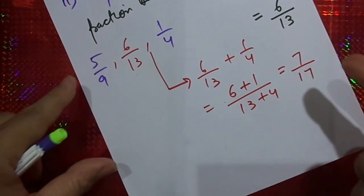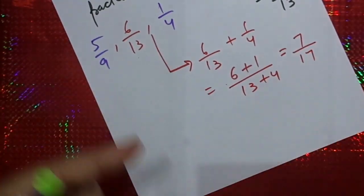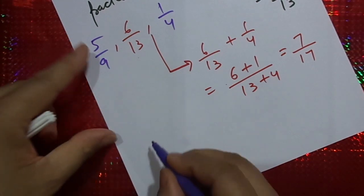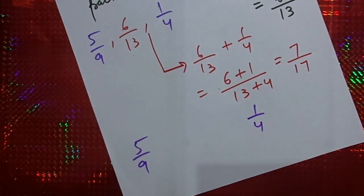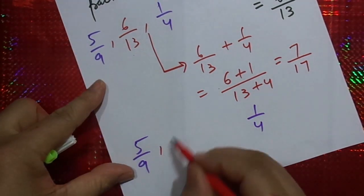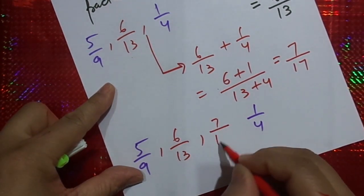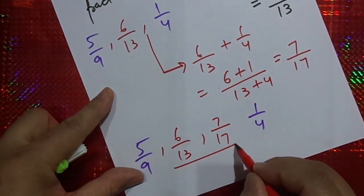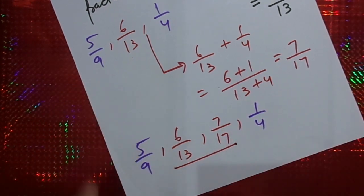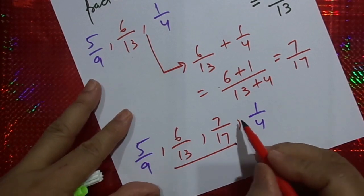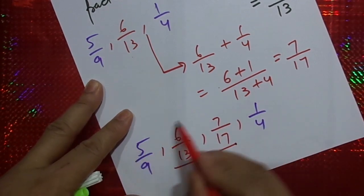So 7 by 17 is another fraction between these two. Our final solution is: 5 by 9, then 6 by 13, then 7 by 17, then 1 by 4. These are the two fractions between 5 by 9 and 1 by 4. If they ask for one more fraction, you can insert one fraction between any adjacent pair. It totally depends on how you take it.